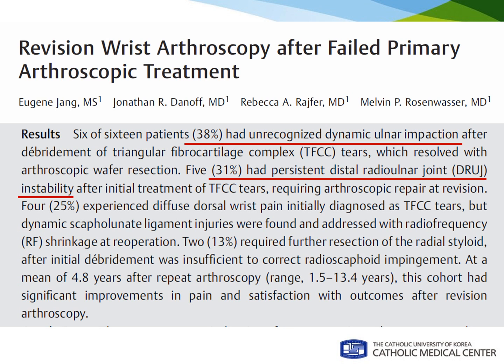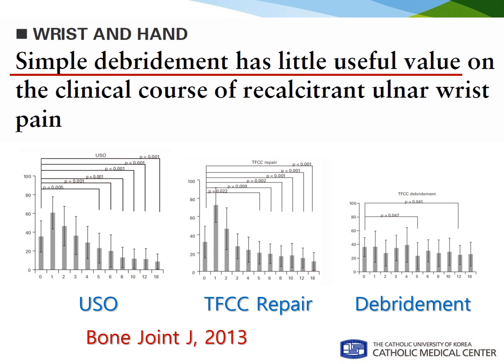The two most common reasons for failure of primary arthroscopic wrist surgery are unrecognized dynamic ulnar impaction and persistent distal radioulnar joint instability. To solve these two problems, either ulnar impaction osteotomy or TFCC repair has to be done, as simple debridement has little value.